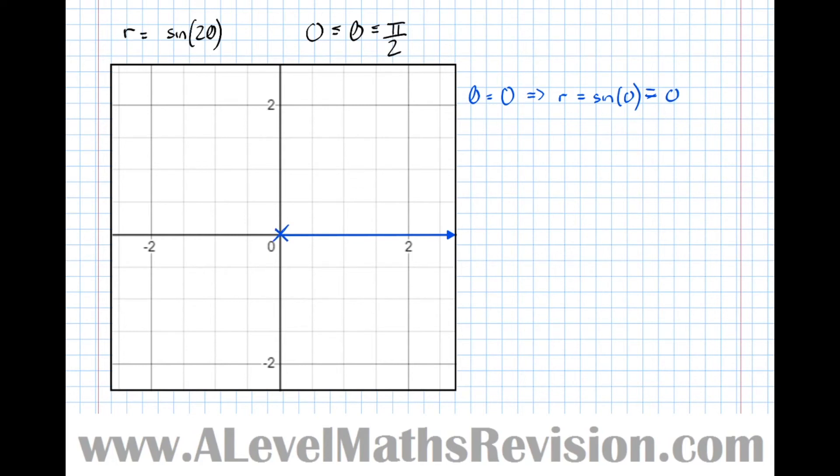Now let's let theta equal pi over 4, i.e. 45 degrees. Let's draw that line there. So our next point lies somewhere on that line.